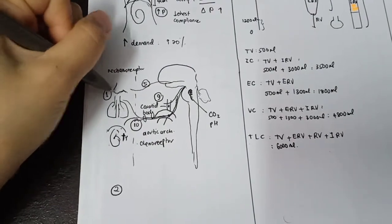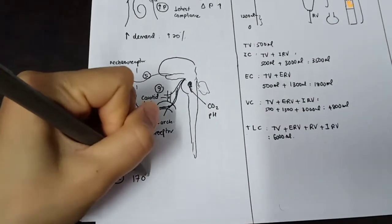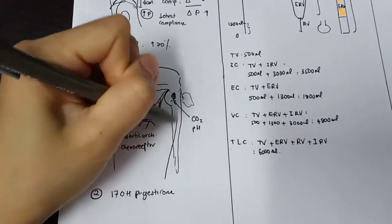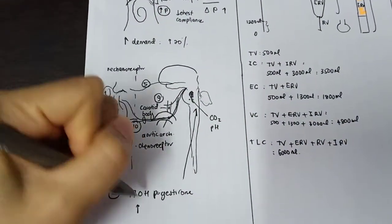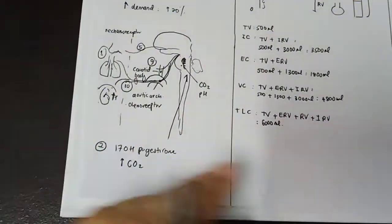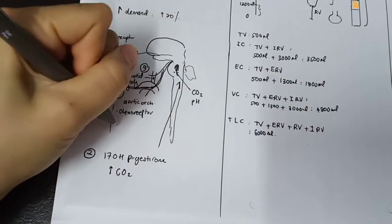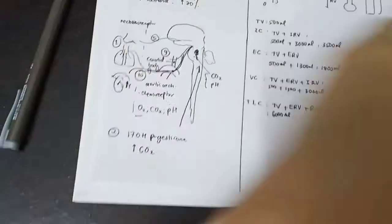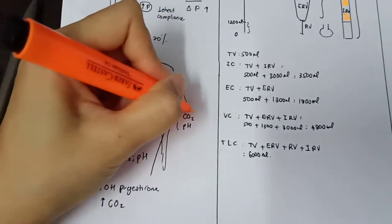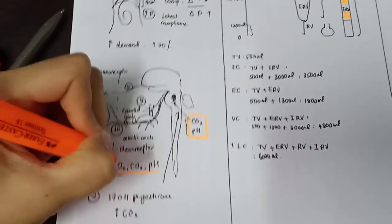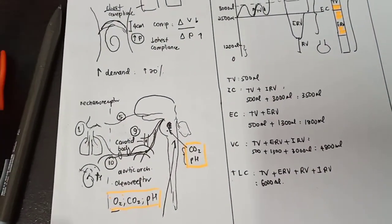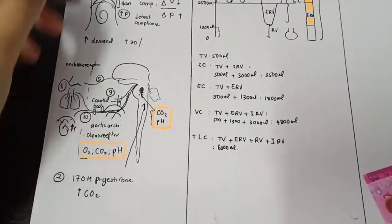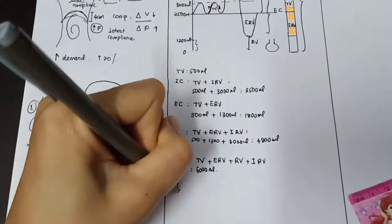The second mechanism is that progesterone, produced by the placenta, directly stimulates the central nervous system to increase its sensitivity towards carbon dioxide. Remember, the central chemoreceptor is only sensitive to carbon dioxide and pH, while the peripheral chemoreceptor is sensitive to oxygen, carbon dioxide, and pH — this difference is often asked in the MRCOG. Due to reduced chest compliance and space occupation by the fetus, the total lung capacity reduces by 5%, from 6,000 to 5,700 ml.